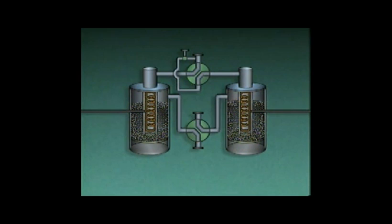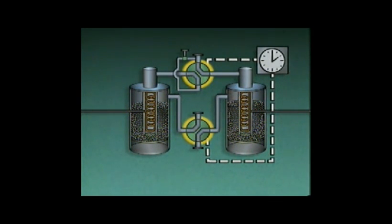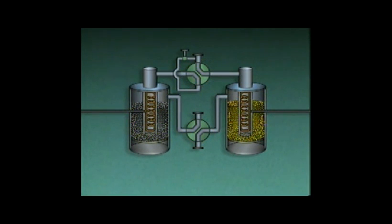Switching back and forth between tanks is often controlled by a timer. After one tank has been regenerated for a preset period of time, the timer changes the positions of the four-way valves so that the regenerated desiccant is used to dry the gas, while the desiccant that was used to dry the gas is regenerated.